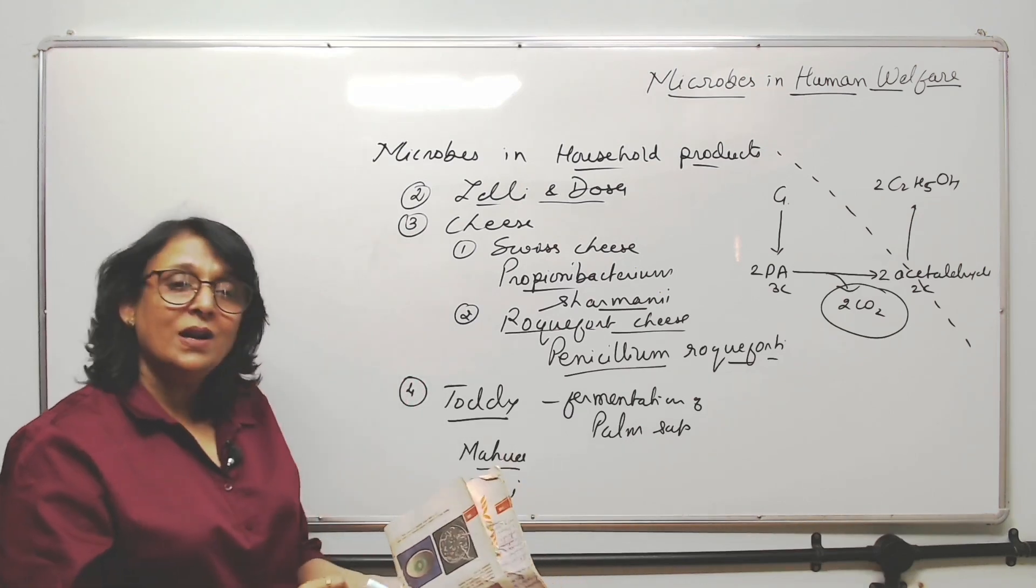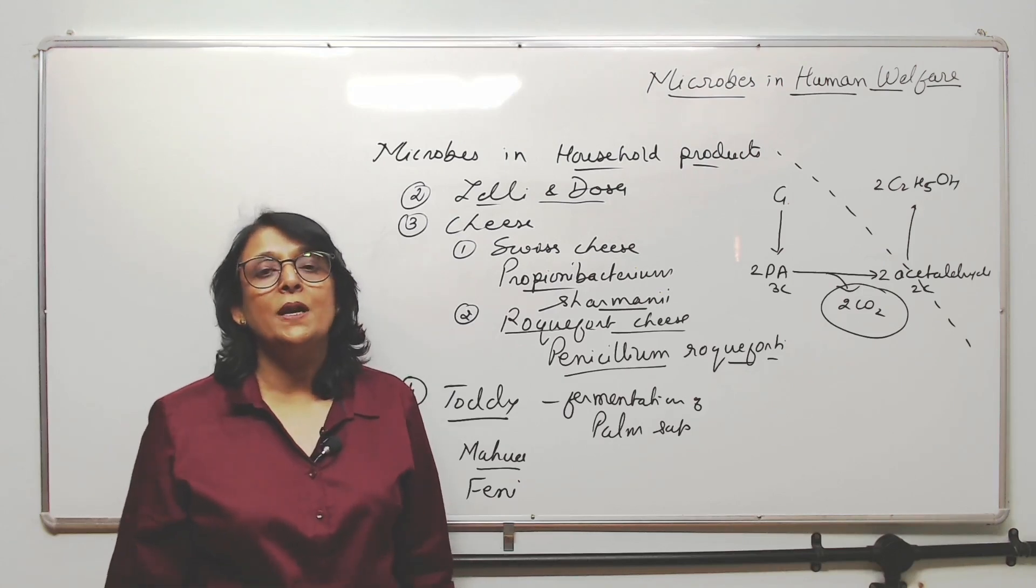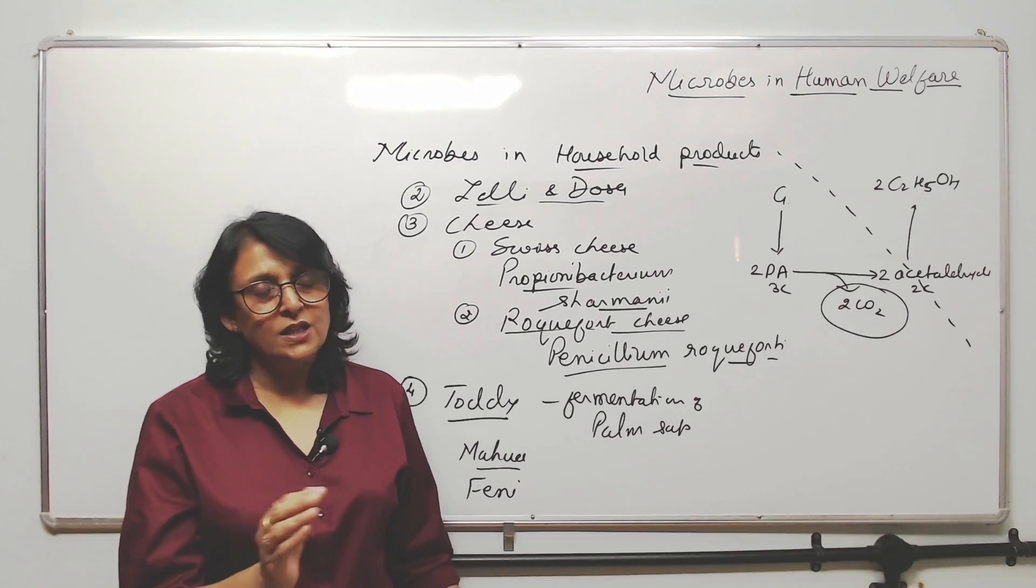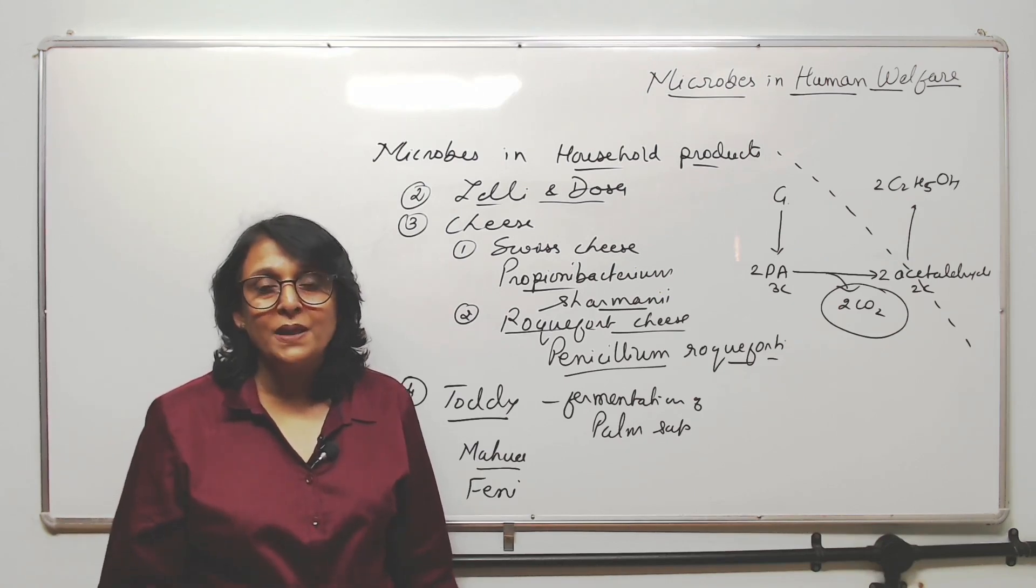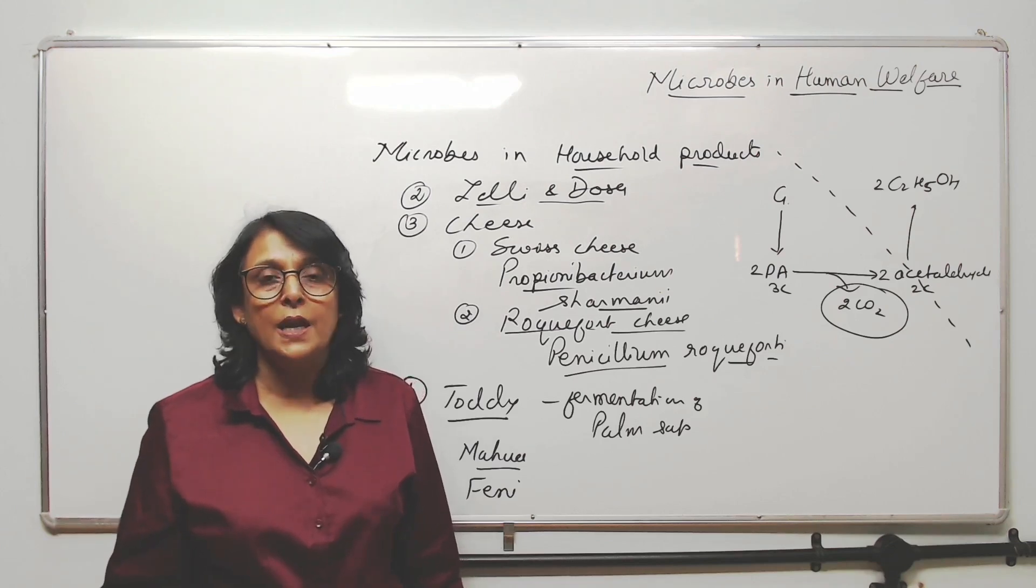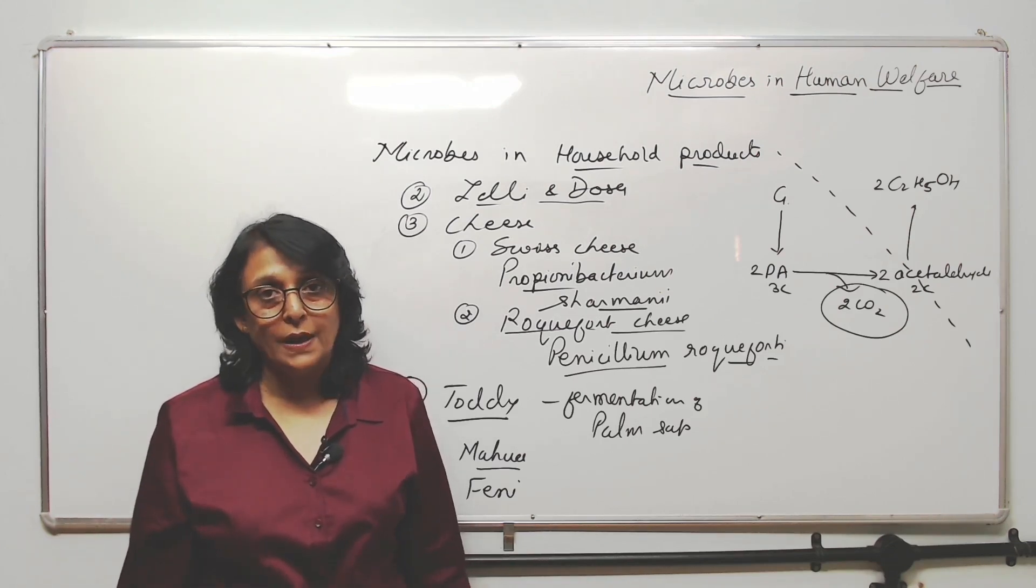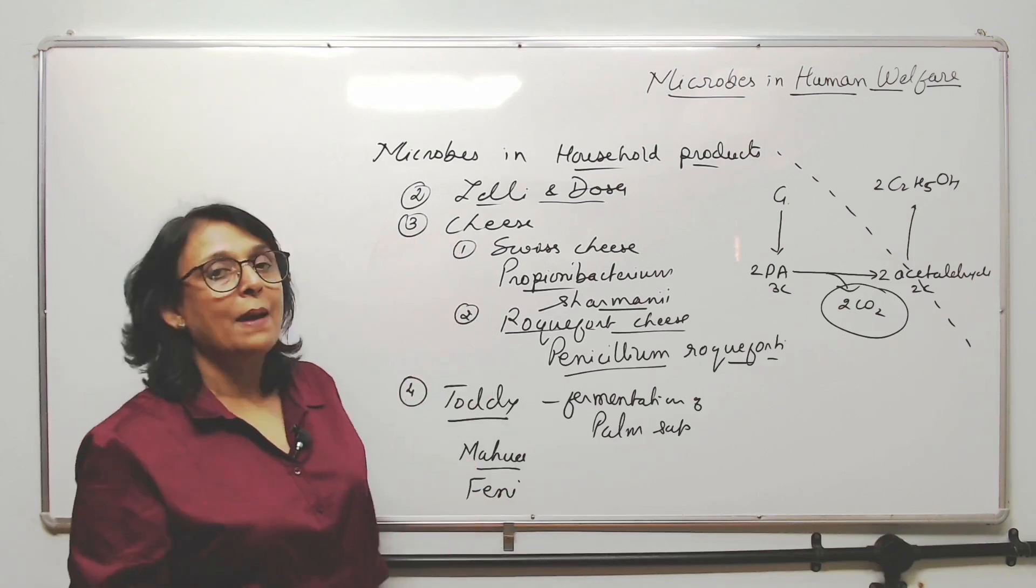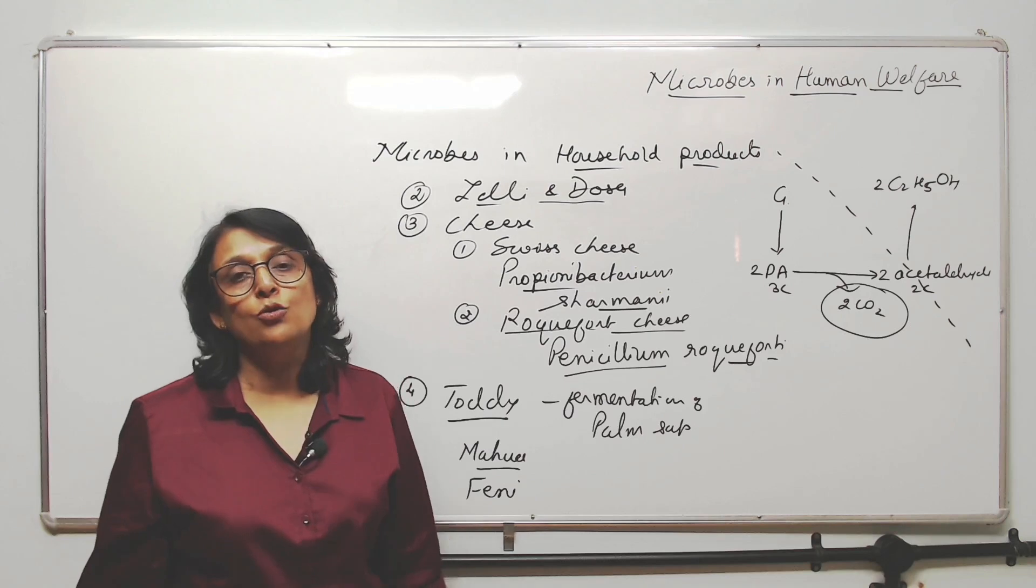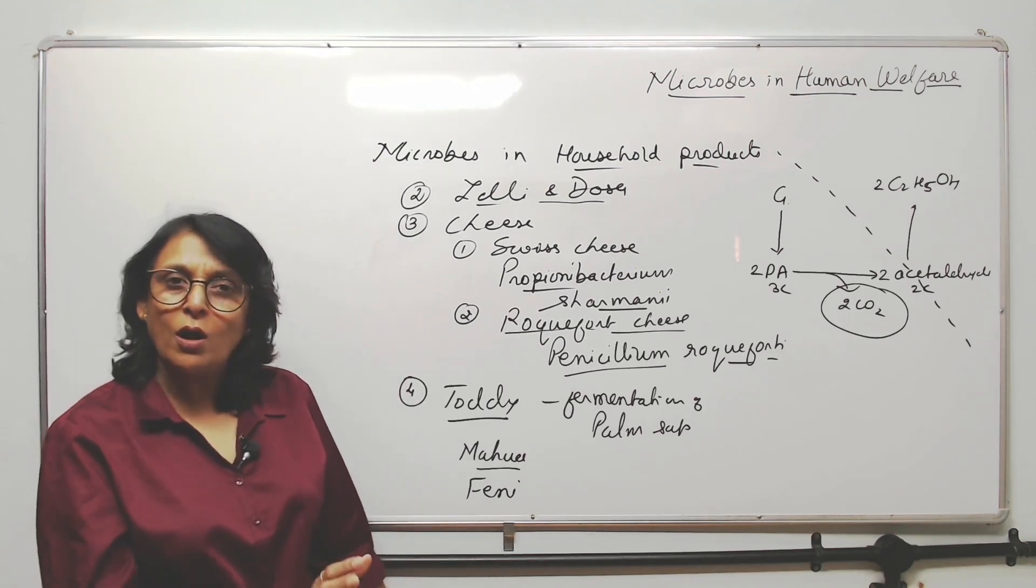These are local alcoholic drinks and till date also people are making these kind of things in their household. It is a very small scale. It can be for the family, it can be only for a small community, not on industrial scale but it is a local thing which is happening. These are all the applications, these are all the uses of microbes in the household products. Everything is done in the house, small level.